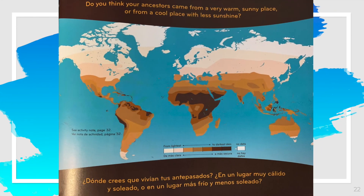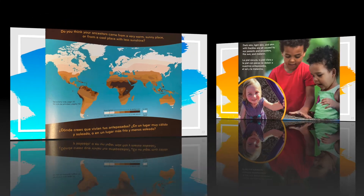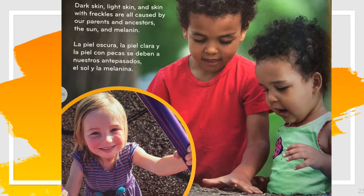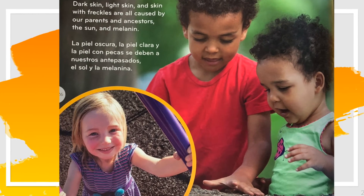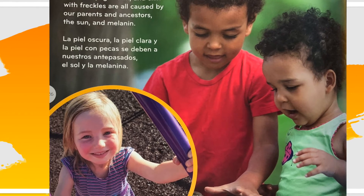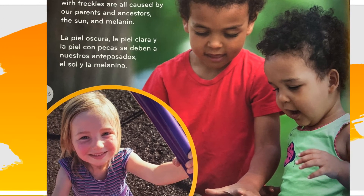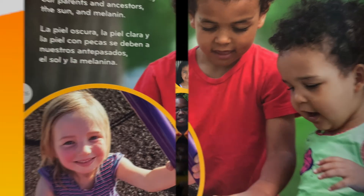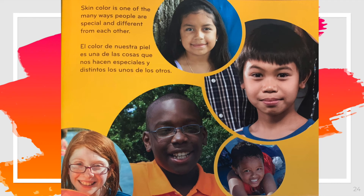Do you think your ancestors came from a very warm sunny place or from a cool place with less sunshine? Dark skin, light skin, and skin with freckles are all caused by our parents and ancestors, the sun, and melanin. Skin color is one of the many ways people are special and different from each other.